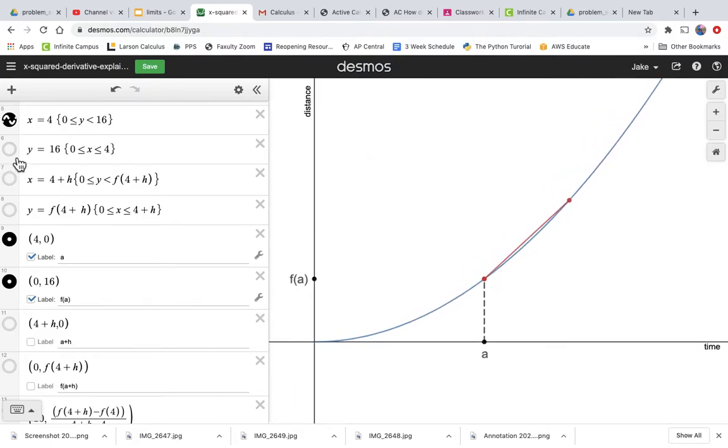So we have f(a), and that would look like this. We have some x value we'll call a, and then we evaluate the function—we plug a into x², and that gives us our f(a), which gives us our y value, our distance.